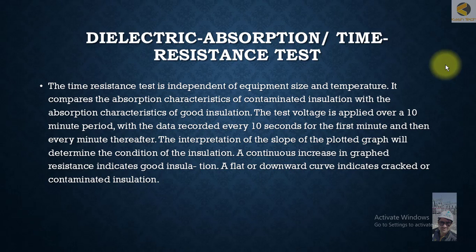A continuous increase in graph resistance indicates clean, healthy insulation. A flat or downward curve indicates cracked or contaminated insulation. The concept is that we hold the voltage for up to 10 minutes and record insulation resistance readings at given intervals.